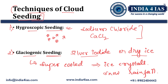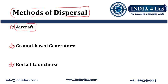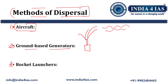There are three methods of dispersal for cloud seeding agents. First is by aircraft — either fixed-wing aircraft or helicopters are used to release the cloud seeding agent directly into the clouds. Second is ground-based generators, which release seeding agents into air currents that carry them to the clouds. Third is rocket launchers, where rockets are used to disperse seeding materials at higher altitudes.